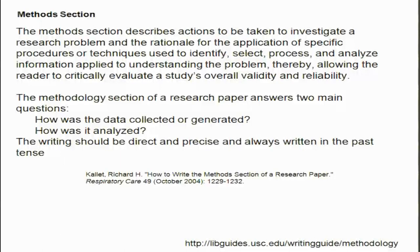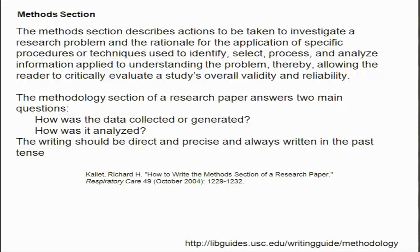The methods section describes actions taken to investigate a research problem and the rationale for the application of specific procedures or techniques used to identify, select, process and analyze information. It is not simply saying how you have done something — it is also important to tell why you have used that approach. How was the data collected and generated? How was it analyzed? The writing should be direct, precise, and always written in the past tense, because you are narrating what you have done.